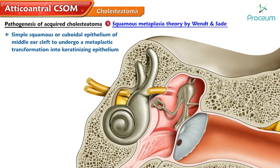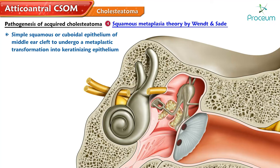There is a chance for the simple squamous or cuboidal epithelium of the middle ear cleft to undergo metaplastic transformation into keratinizing epithelium. The pluripotent epithelial cells, stimulated by inflammation, can become keratinizing, which enlarges because of accumulated debris and gets into contact with the tympanic membrane. With infection and inflammation, cholesteatoma results in perforation of the tympanic membrane and presents as primary acquired cholesteatoma.